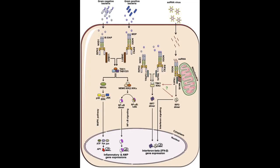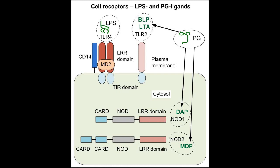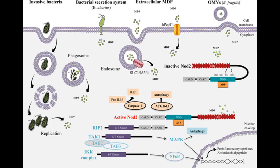NOD1 and NOD2, members of the CARD domain-containing NOD subfamily of NLRs, are expressed in the cytosol of several cell types including mucosal epithelial cells and phagocytes. NOD2 is highly expressed in intestinal Paneth cells, where it stimulates expression of antimicrobial substances called defensins in response to pathogens. NOD1 recognizes D-aminopimelic acid (DAP), derived mainly from gram-negative bacterial peptidoglycan, whereas NOD2 recognizes muramyl dipeptide derived from both gram-negative and gram-positive peptidoglycans.